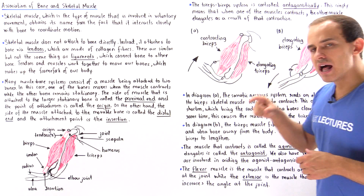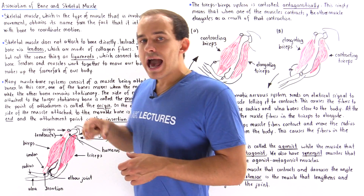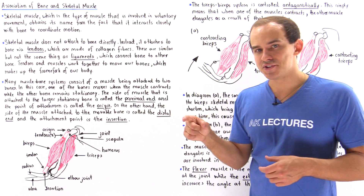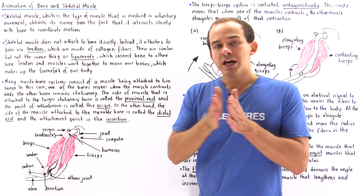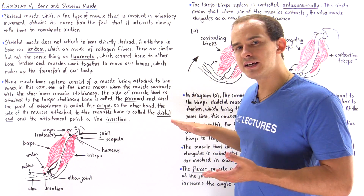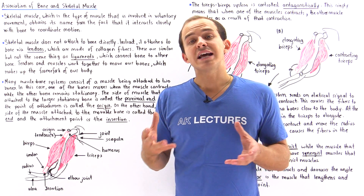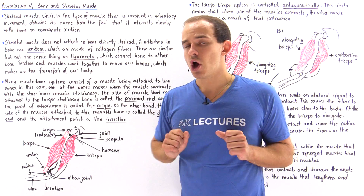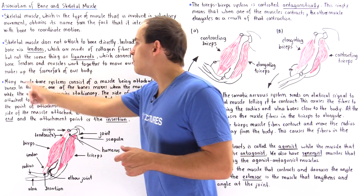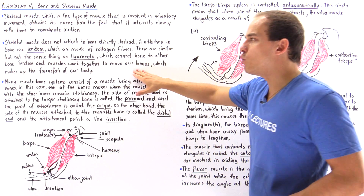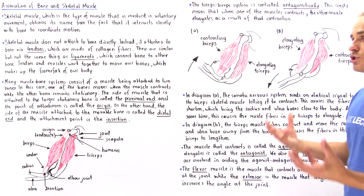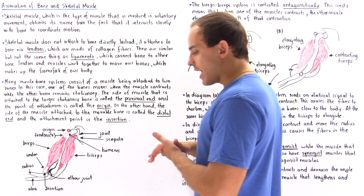Skeletal muscle does not actually attach directly to bone. Our skeletal muscle attaches to our tendons, and it's the tendons — which consist of collagen fibers — that actually attach to our bone. Tendons should not be confused with ligaments. Ligaments are fibers that connect bone to other bones, but tendons are fibers that connect our skeletal muscle to bone. Tendons and muscles work together to move our bones, which ultimately controls the movement of our body.